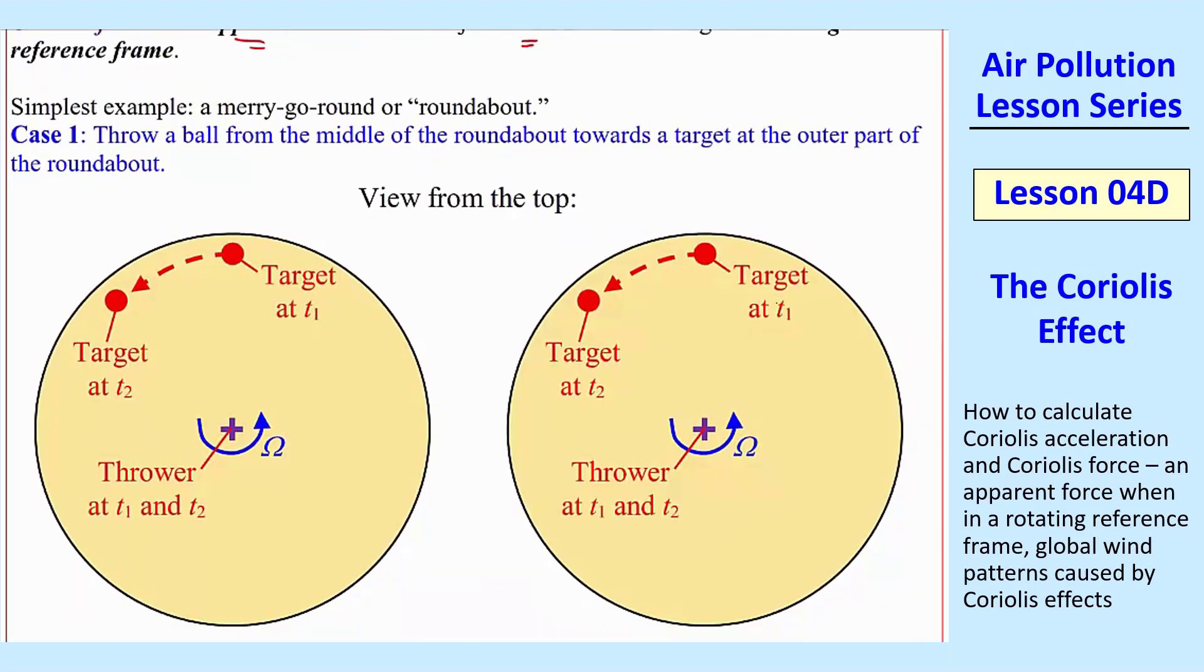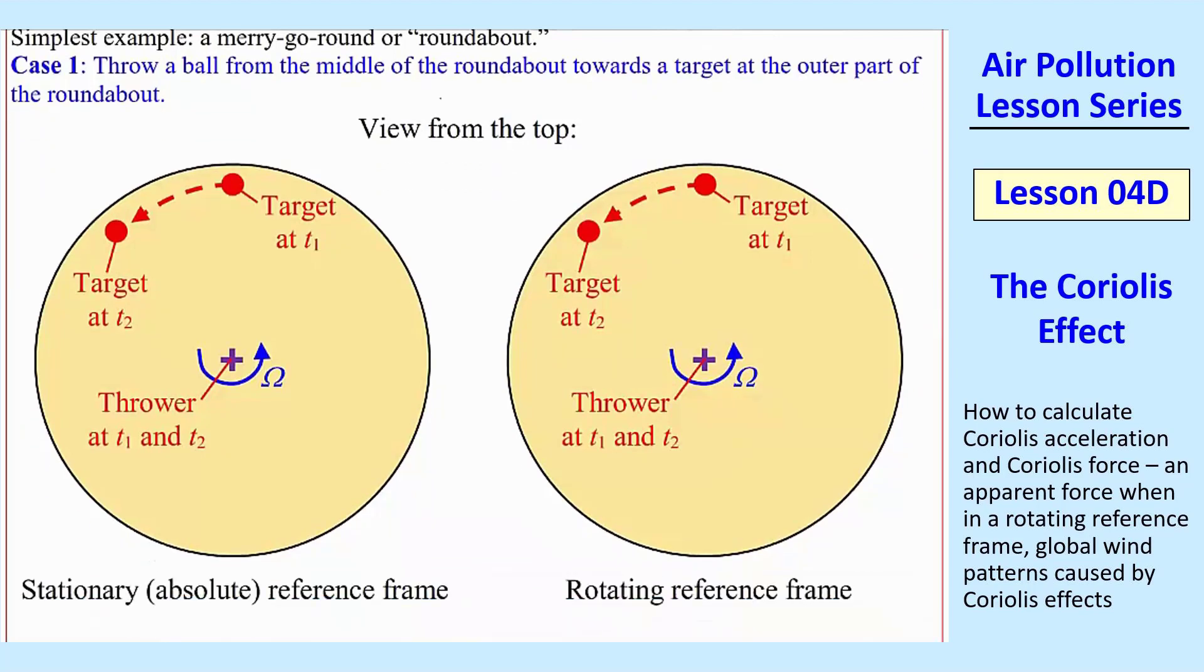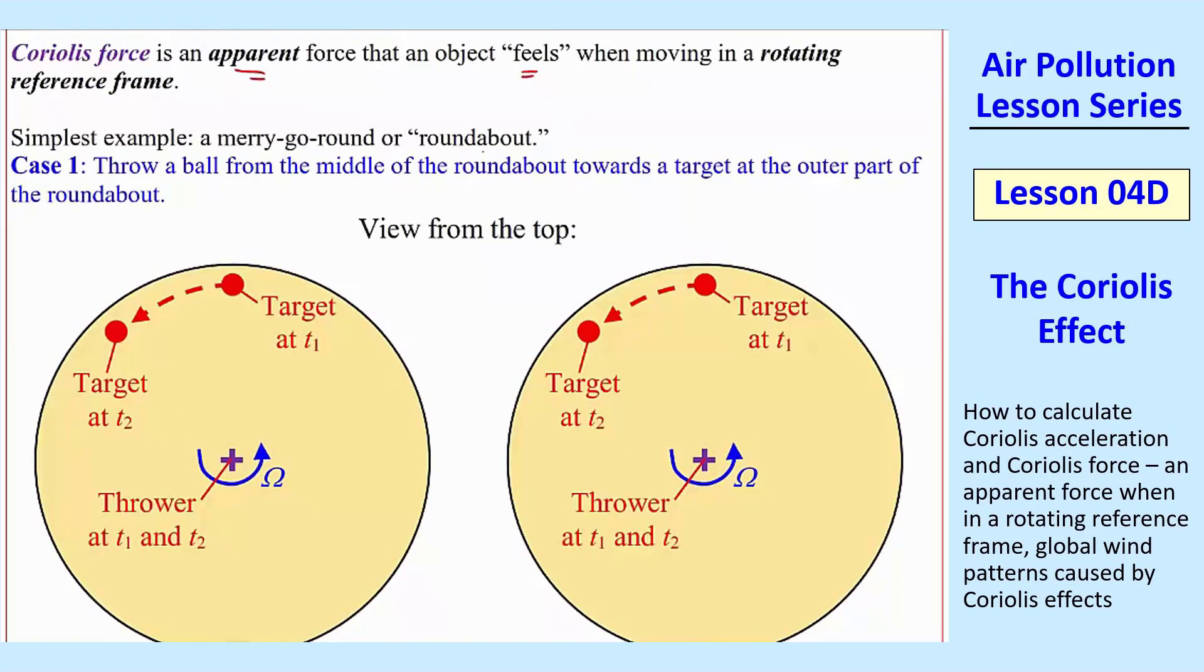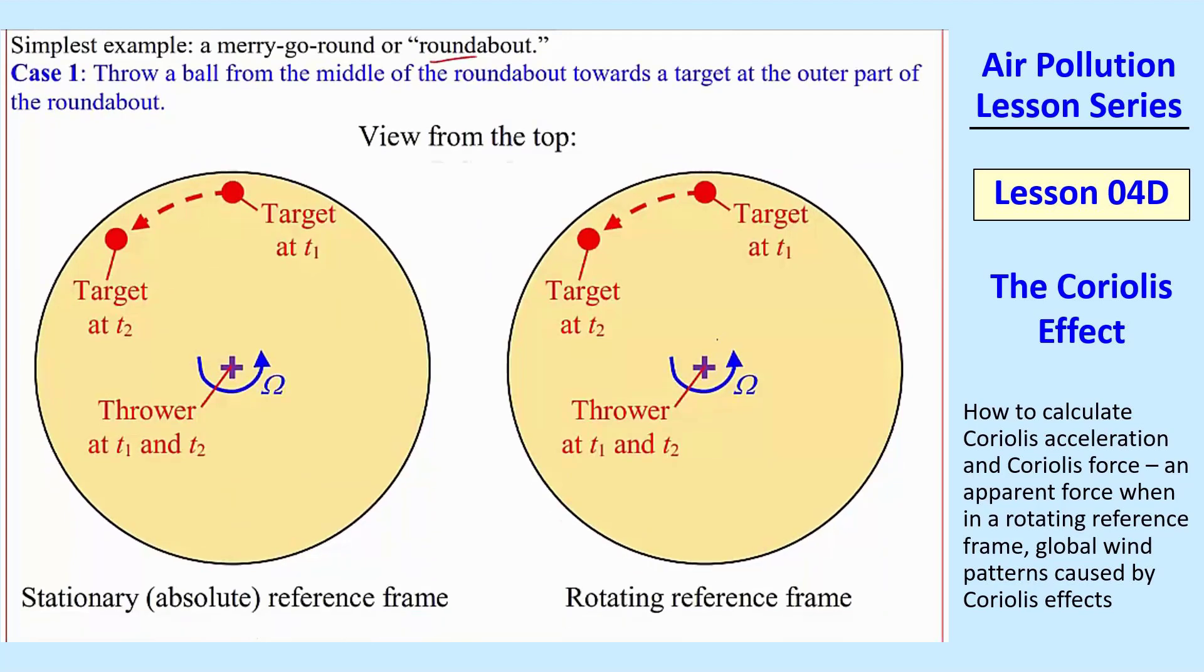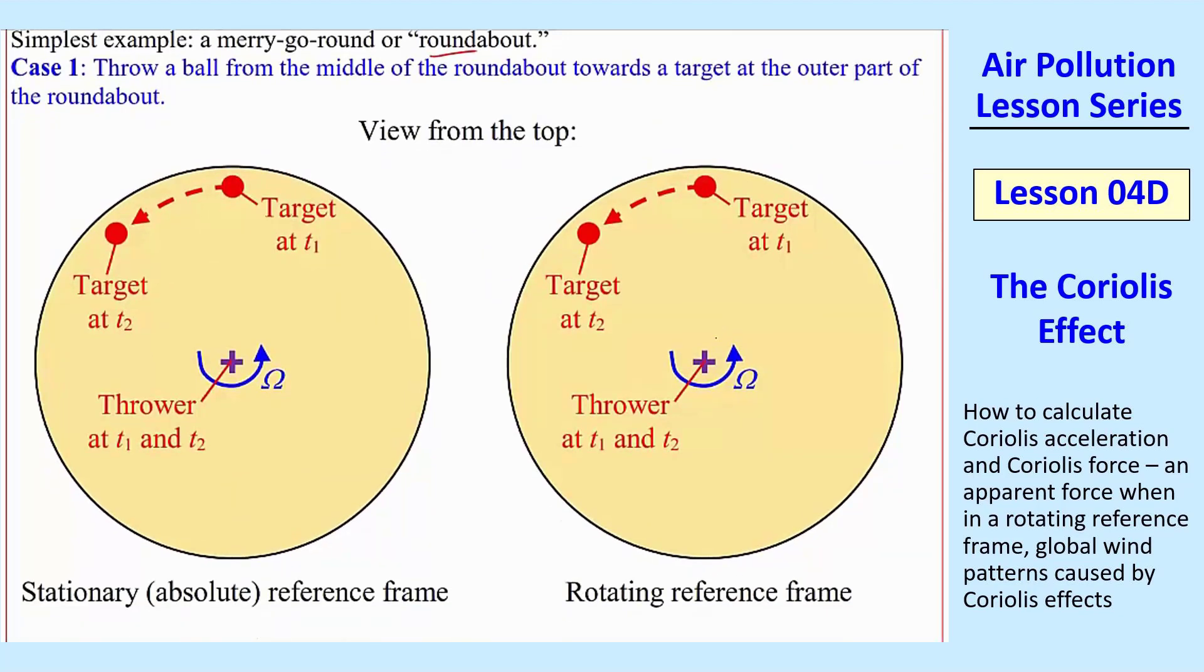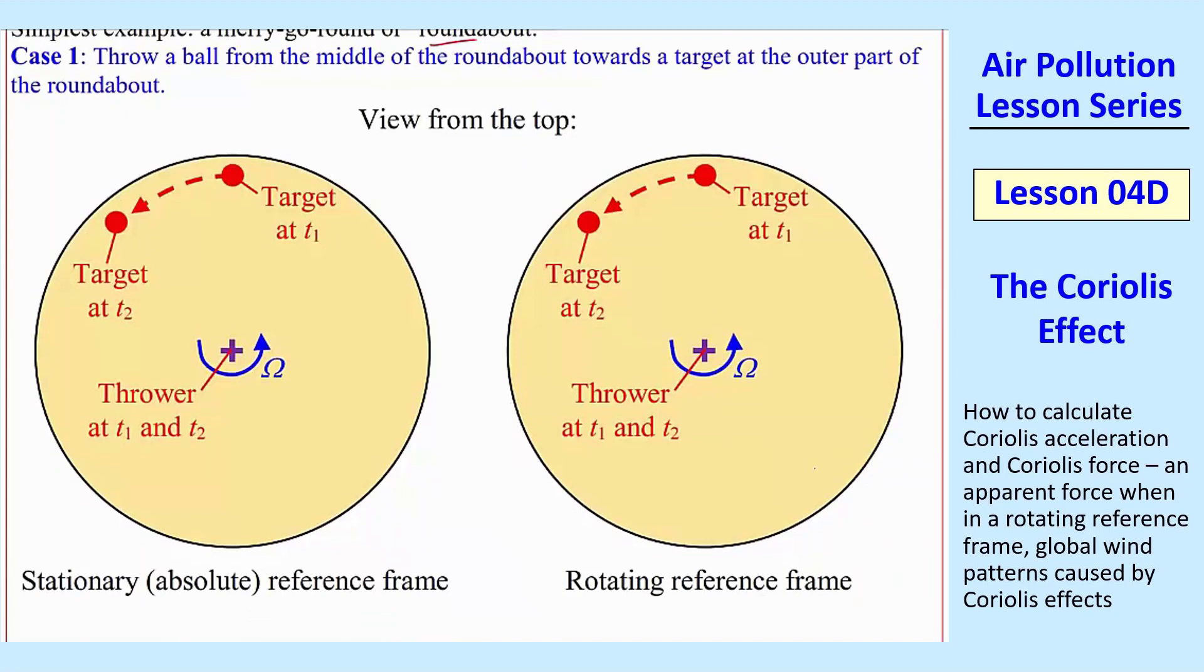The Earth is a little more complicated. Technically, this is called a roundabout, not a merry-go-round. But if you have people standing on one of these roundabouts that just rotate around. And let's look at case one, where we throw a ball from the middle of the roundabout towards a target at the outer part. This whole thing is rotating. When we're looking from the top down, it's rotating at an angular velocity omega.